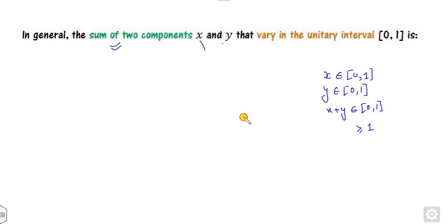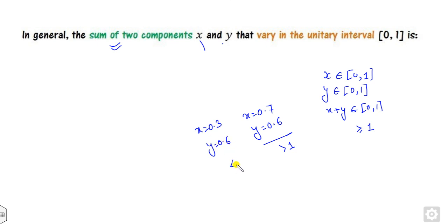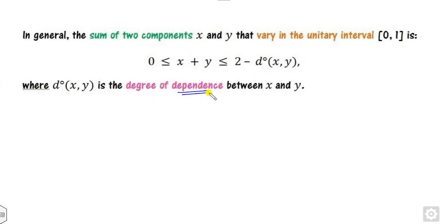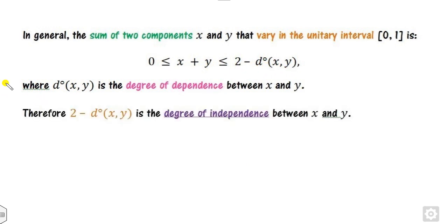For example, if x is 0.7 and y is 0.6, the sum is greater than 1. If x is 0.3 and y is 0.6, the sum is less than 1. In general, x plus y will always be less than 2 minus d, where d is the degree of dependency between x and y. Correspondingly, 2 minus d is the degree of independency.